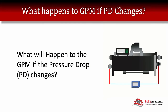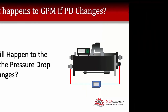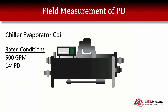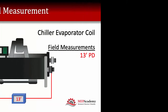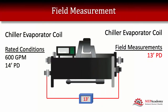So, what will happen to the GPM if the pressure drop increases or decreases? For our example, we're going to take a new chiller that was rated for 600 GPM at 14 feet of pressure drop through its evaporator. When we go into the field and measure the actual pressure drop, we get 13 feet, not 14 as it was rated. So what is this going to do to our GPM?